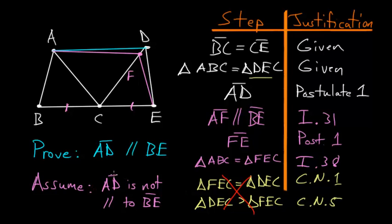that AD is not parallel to BE. And that basically leaves us with just one possibility: that AD has to be parallel to BE. And that is exactly what we are trying to prove, so we can end with QED.